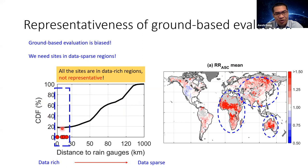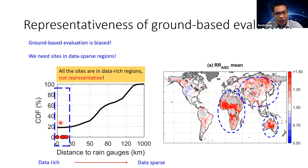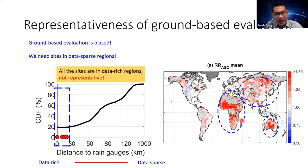This figure further highlights the contribution of our analysis. The black curve shows the global cumulative distribution of the distance of a pixel to the nearby rain gauges, where zero means data-rich regions and moving right means data-sparse. We find that all the dense soil moisture networks — the red circles — are located in data-rich regions, representative of only about 20% of the globe. This means we have simply been unable to sample the contribution of SMAP data assimilation over data-sparse regions such as Africa, Asia, and central Australia, and therefore previous ground-based evaluation analyses are very likely to be biased.